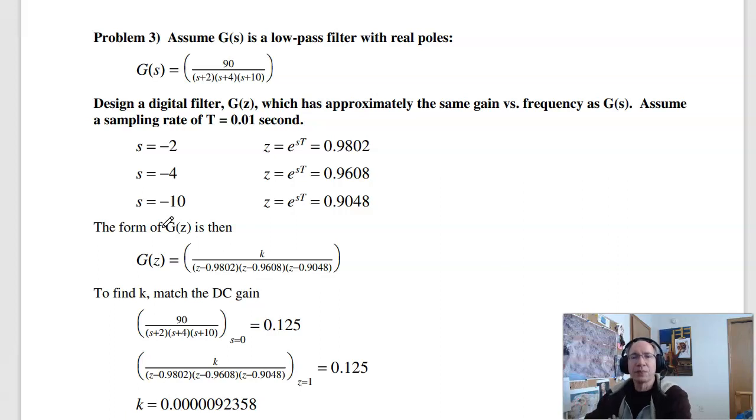Problem three. Come up with a filter in the z-plane that has the same frequency response, basically the same filter, in the z-plane. The approach I like using is using the mapping z is e to the st. I like that because it gives me more intuition. I can see how the poles map. So pole at minus two becomes 0.9802, minus four becomes 0.9608, minus 10 becomes 0.948.